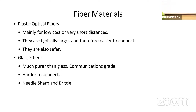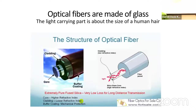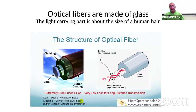There are plastic fiber optics, which are mostly low cost, for very short distances, larger in size, easy to connect, and safer in that they won't shatter and get under your skin. Glass fiber is going to be pure communication grade — harder to connect because they're small, needle sharp, and brittle. Fiber optics are made of glass and the light-carrying part is the size of a human hair. The structure has a core where light travels, cladding used mostly to perform internal reflection, and usually a jacket to protect it from impact.